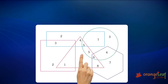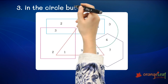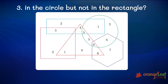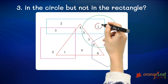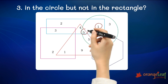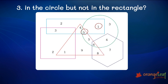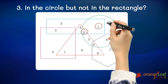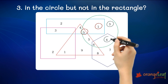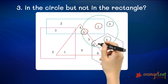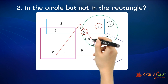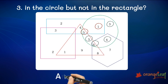Can you tell me the sum of the numbers present in the circle but not in the rectangle? There are six numbers in the circle and two numbers in both the rectangle and the circle. So we have four numbers present: three, four, five and six. Three plus four is seven. Seven plus six is thirteen. Thirteen plus five is eighteen. So the answer is eighteen.